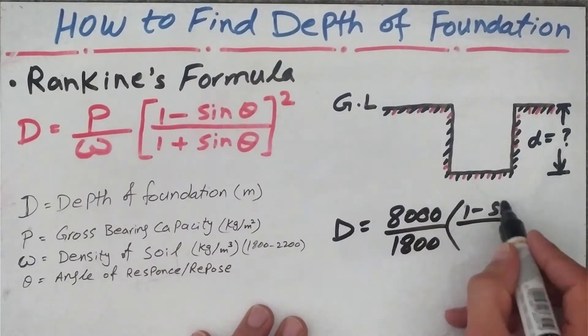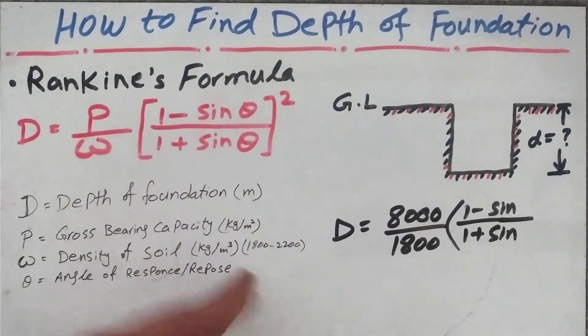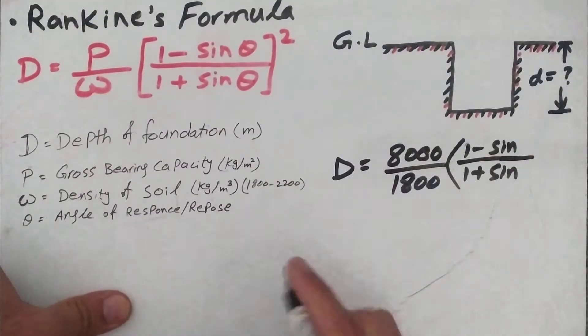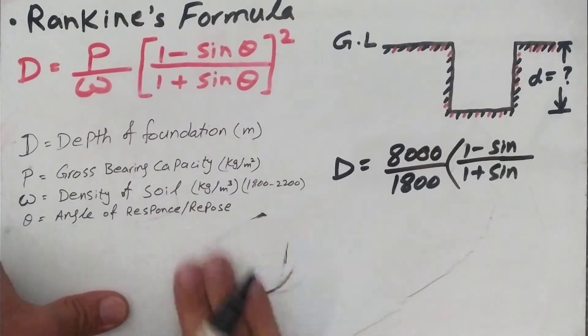Because it is between 1800 and 2200, so I'll take the minimum 1800, then multiply by (1 - sin θ)/(1 + sin θ).